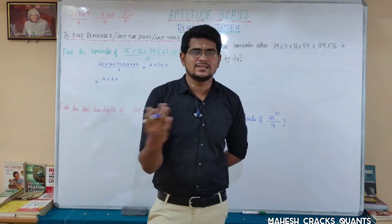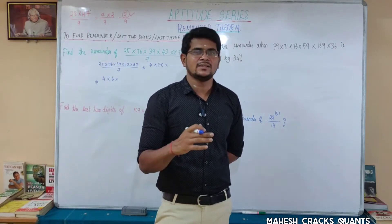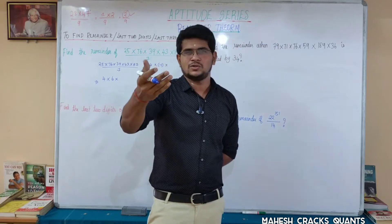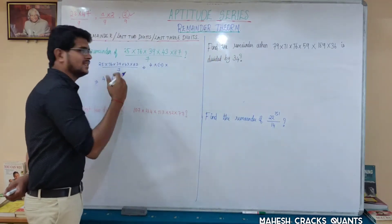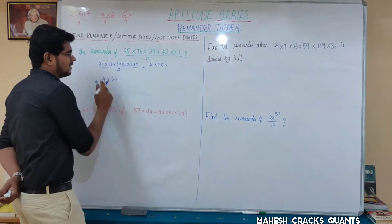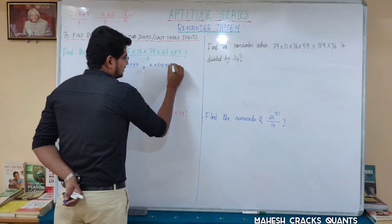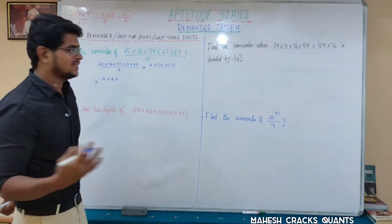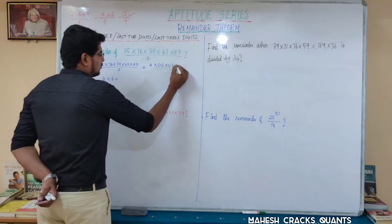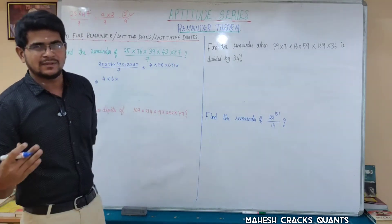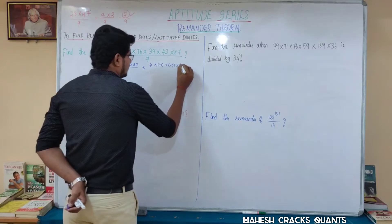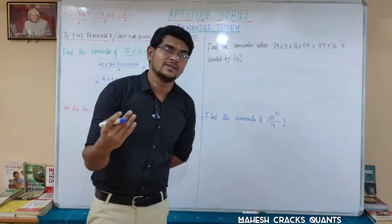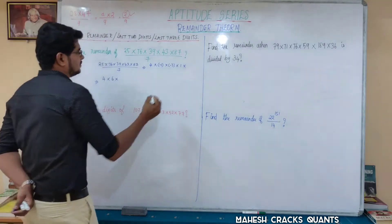How many times of 7 is near 39? 5 times of 7 is 35, 6 times of 7 is 42. 42 is near 39, so we have minus 3. For 43 — 42 is nearby, so remainder 1. And 87: 12 times of 7 is 84, remainder 3.